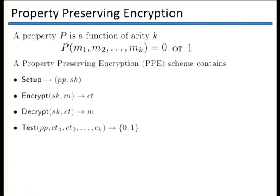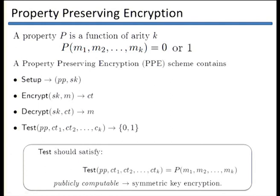The testing algorithm should output the same value as the property we decided at the beginning of our scheme. Namely, if you apply the testing algorithm on K ciphertexts, it should give you the property P on the corresponding K plaintexts. This is the second generalization we considered. Notice that in order-preserving encryption, the testing algorithm was the comparison of the ciphertext — so the test and the property P were the same.